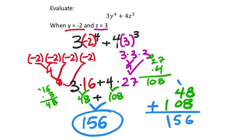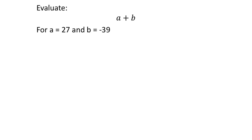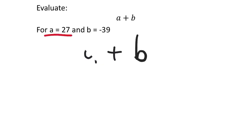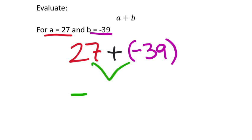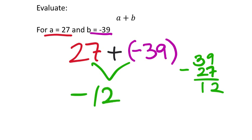Starting in module 3 we'll use calculators, but for now we work by hand. Evaluate a + b where a = 27 and b = −39: substitute to get 27 + (−39). Since 39 is bigger and negative, the answer is negative: 39 − 27 = 12, so the result is negative 12.